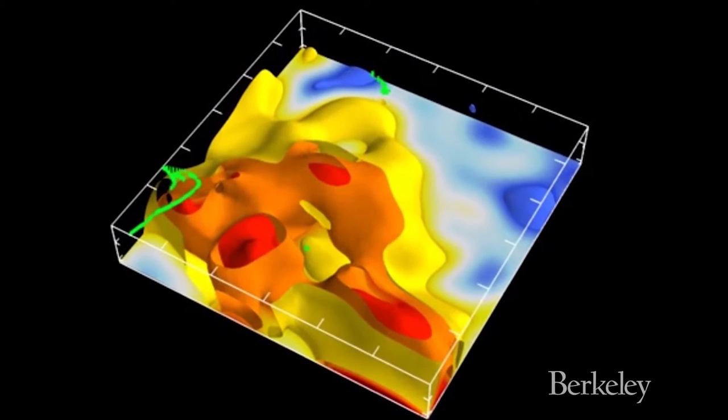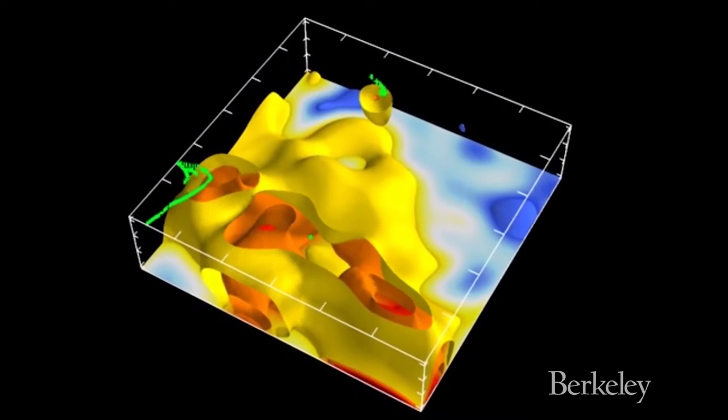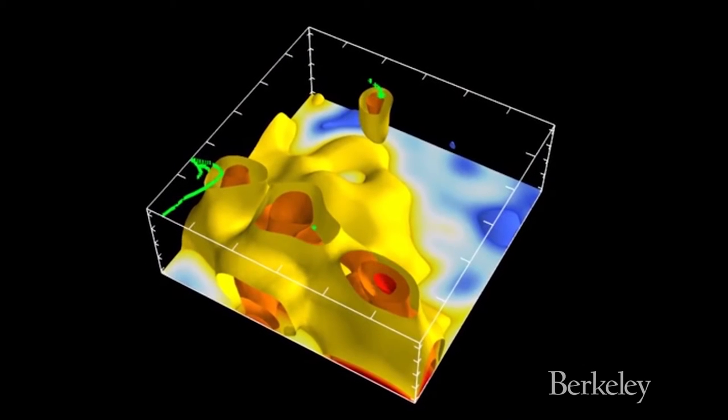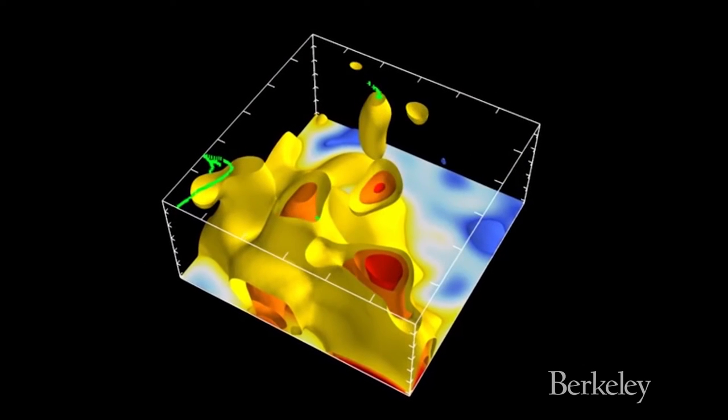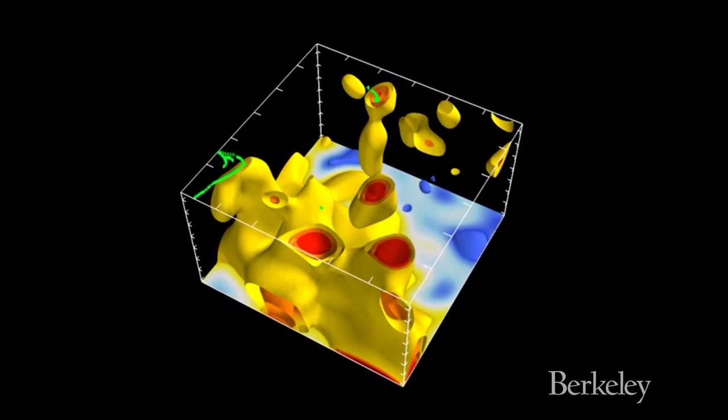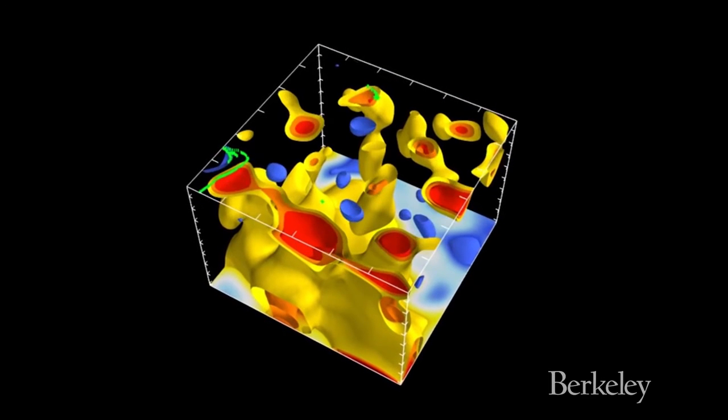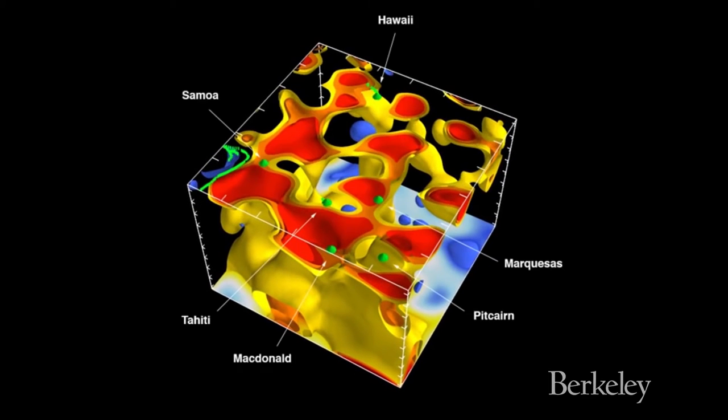Using supercomputers and seismic waves to create images of the layers of Earth's mantle just above the core, the researchers show how great plumes of super hot rock rise, fan out, and correlate to volcanoes on the surface.